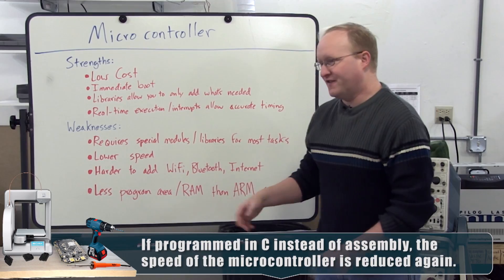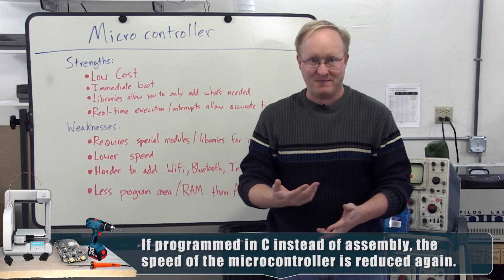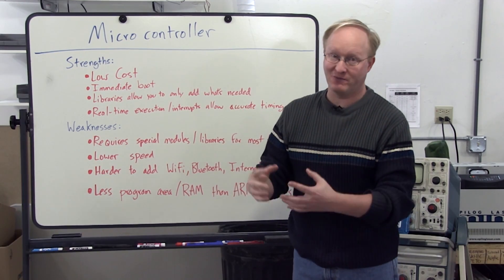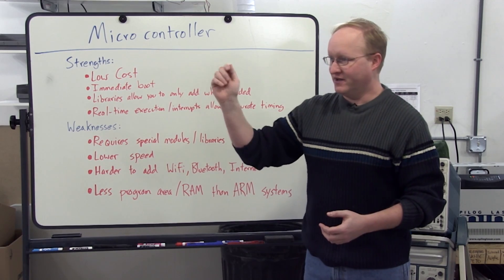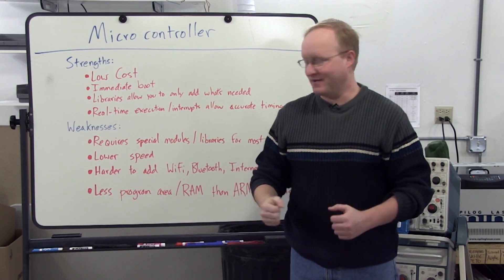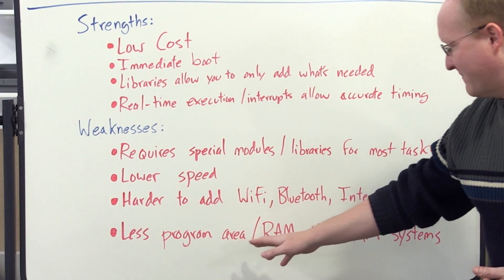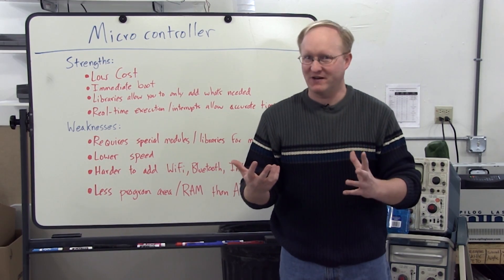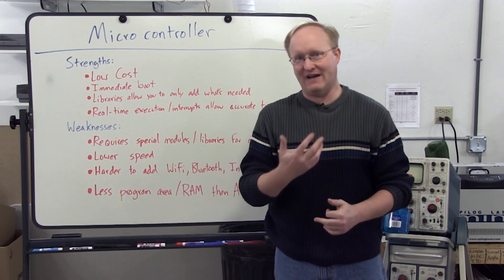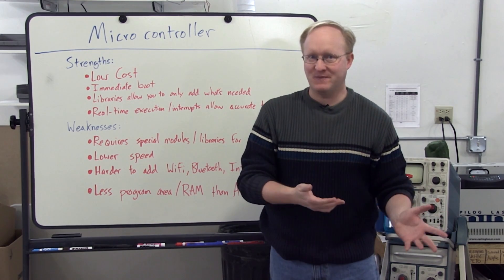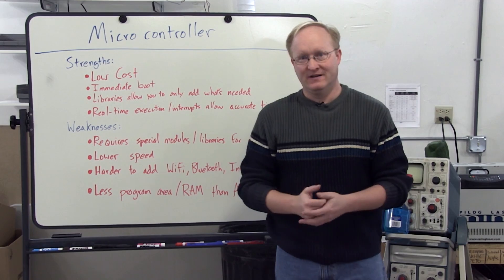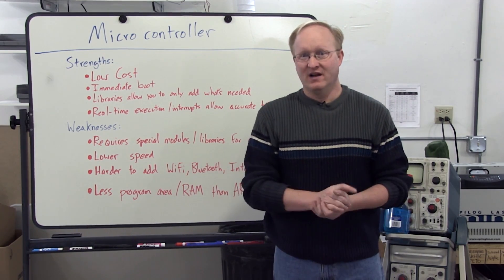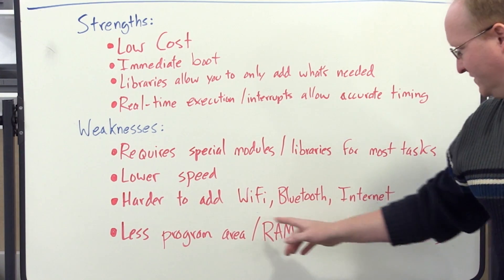Things like Wi-Fi, Bluetooth, the things you take for granted on a Raspberry Pi are more difficult to add to a microcontroller. Again, those things are going to require external circuitry, whereas, you know, your Raspberry Pi can do a lot of that stuff right out of the box. And there's less program area and RAM than an ARM-based system. You know, even a large microcontroller is only going to have, like, half a megabyte of program space and 128K of RAM, versus a Raspberry Pi, which has, what, 512 megabytes of RAM? So there's a big difference in the program area.